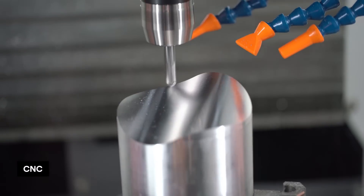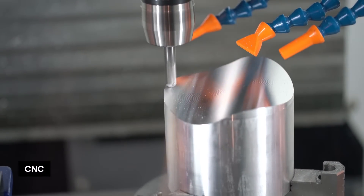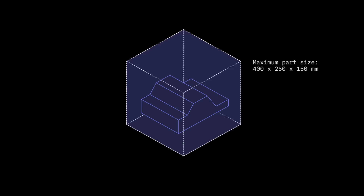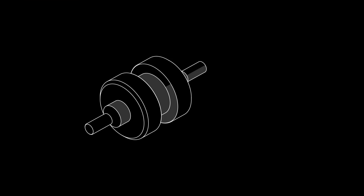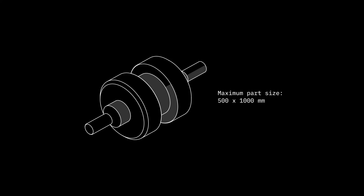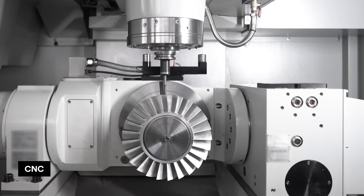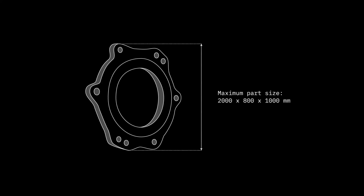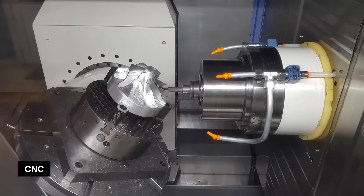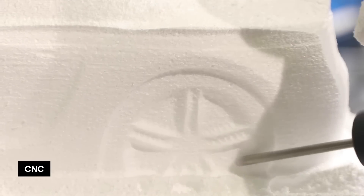Finally, maximum part size. In CNC milling, we recommend a maximum of 400mm × 250mm × 150mm. In CNC turning, the maximum is a 500mm diameter by 1000mm length. Very large CNC machines can produce parts up to 2000mm × 800mm × 1000mm. Note that 5-axis CNC machining systems typically have a smaller build volume.